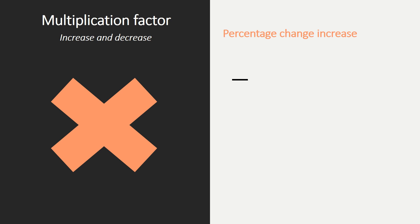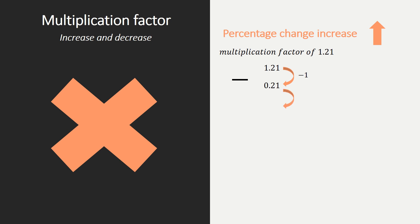How does it work the other way around? If the multiplication factor is given — in this case 1.21 — and we need to get the percentage change for an increase: first, subtract 1. You always need to subtract 1, so you get 0.21. Afterwards, multiply by 100% because we want to know the percentage change. So we know that this should be an increase of 21%.